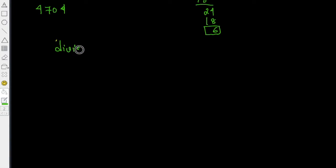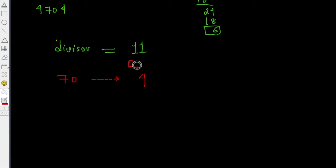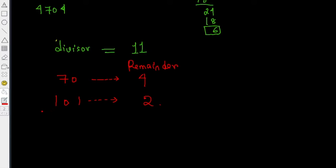Now let's say the divisor is 11, and let's get two test numbers. Let's take 70 as one of the numbers, which when divided by 11 gives remainder 4. And let's take 101, which when divided by 11 gives remainder 2.